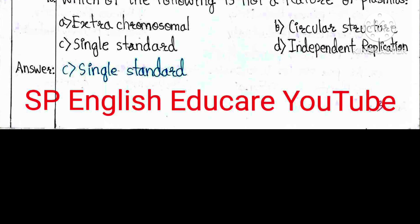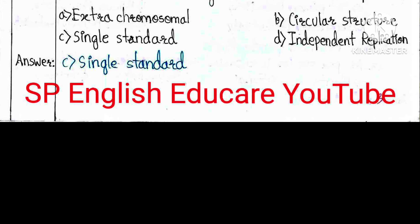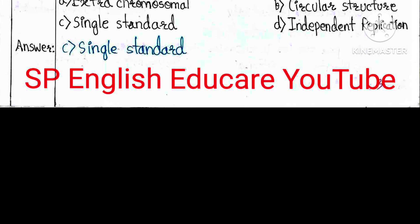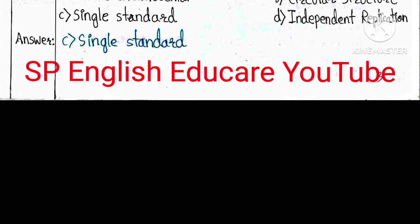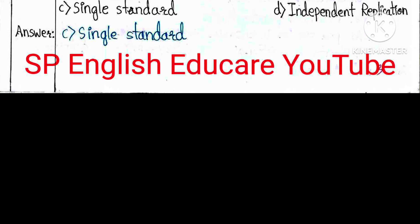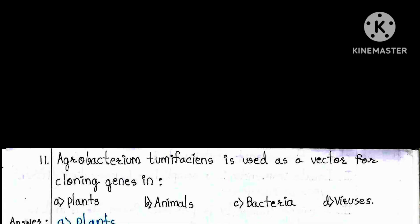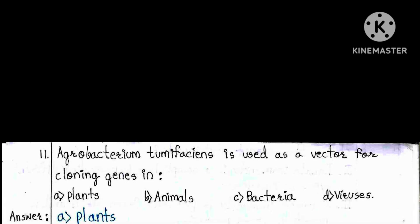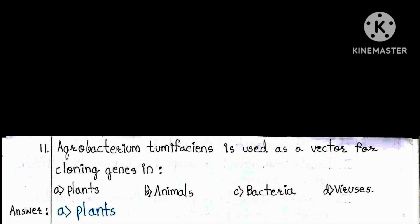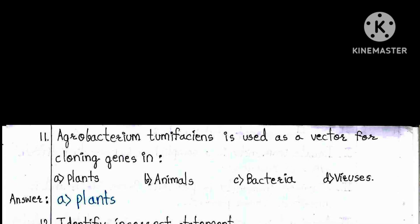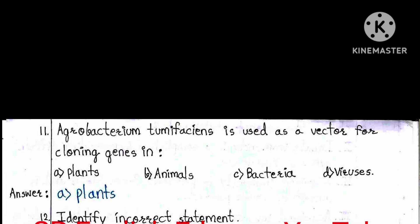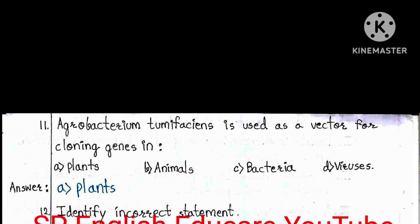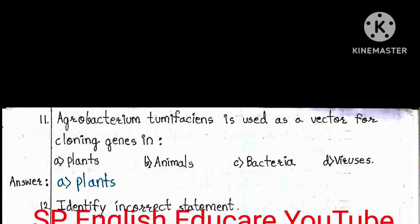Question 10: Which of the following is not a feature of a plasmid? A) Extra-chromosomal, B) Circular structure, C) Single-stranded, D) Independent replication. The answer is C — single-stranded.